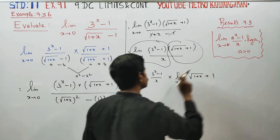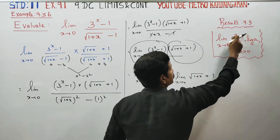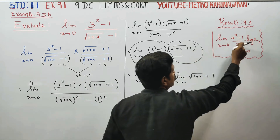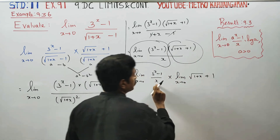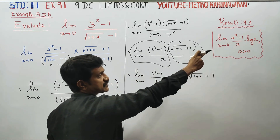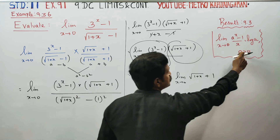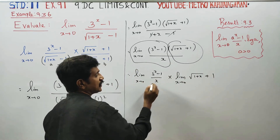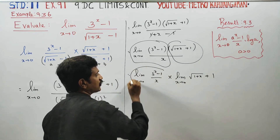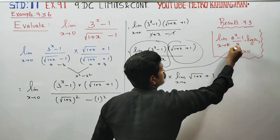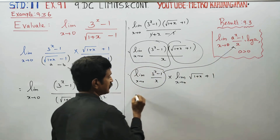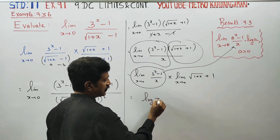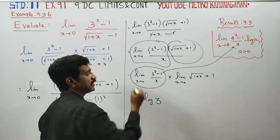This first part matches the ready-made result from theorem 9.3: lim(x→0) (a^x - 1)/x = log a, where a must be greater than 0. Here, a = 3, which is greater than 0, so this formula matches. Therefore the first limit directly gives log a = log 3.